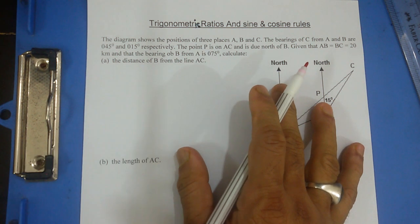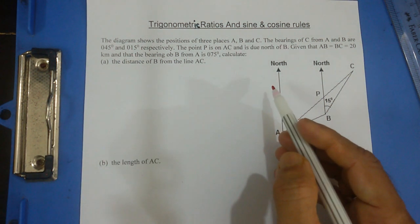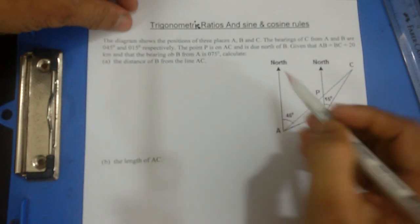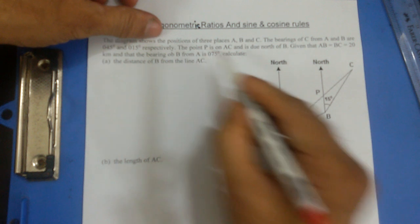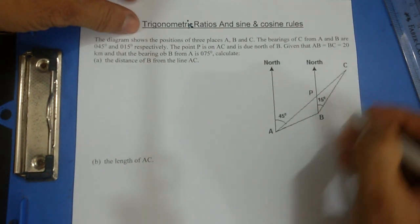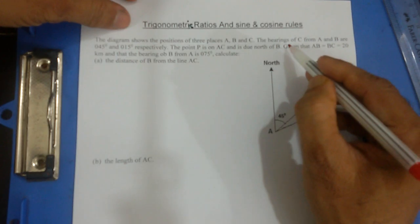It has bearing, sine rule, cosine rule, and sometimes trigonometric ratios as well. And the first one, the diagram shows the positions of three places A, B, and C. The bearing of C from A is 45 degrees.